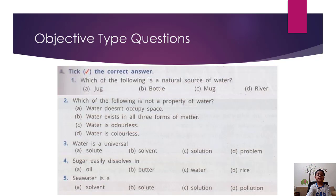Take the correct answer. Which of the following is a natural source of water? River. Which of the following is not a property of water? Water doesn't occupy space. Water is a universal solvent. Sugar easily dissolves in water. Water is a solution.